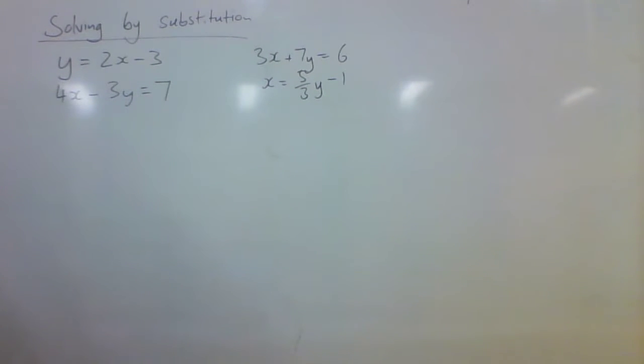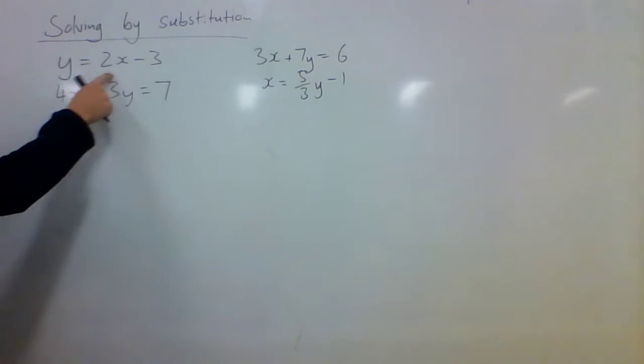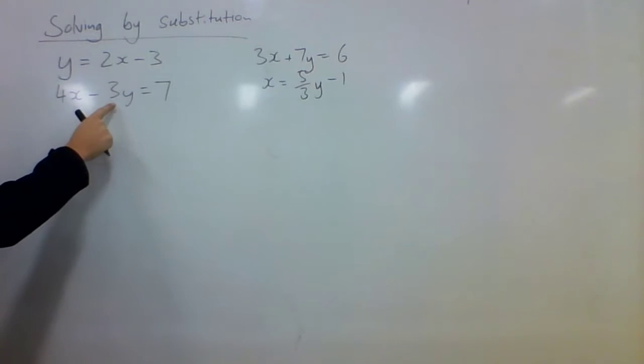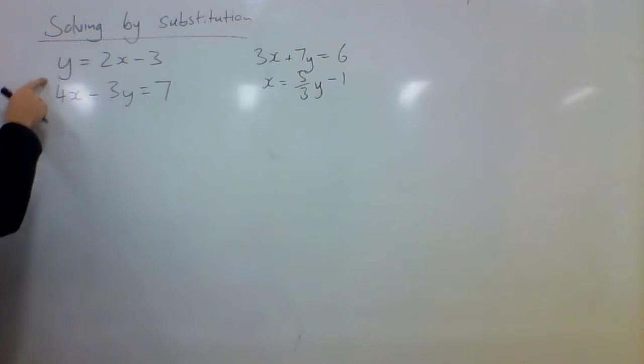Ok, I'm going to show you how to do solving by substitution when you've got some simultaneous equations. You can see we've got two equations here, y equals 2x take 3 and 4x take 3y equals 7. They're in different forms but it doesn't really matter. What we're looking for here is a way to get one of those equations into the other one.